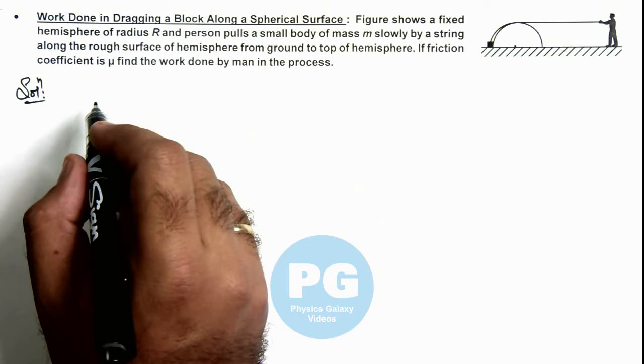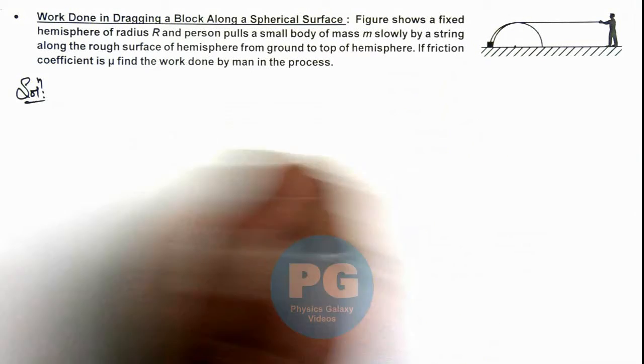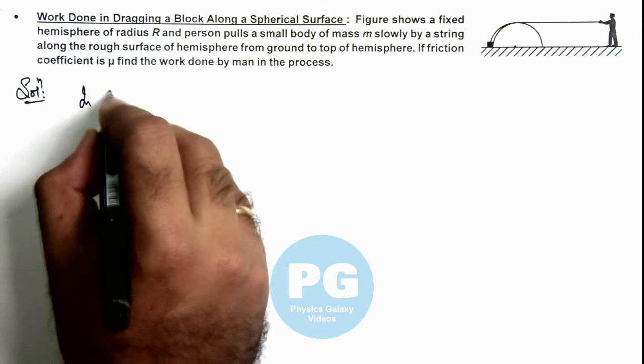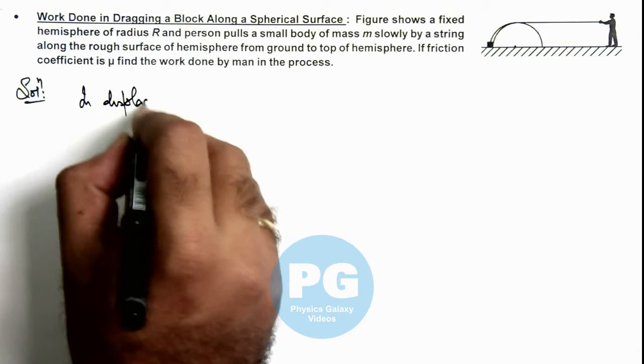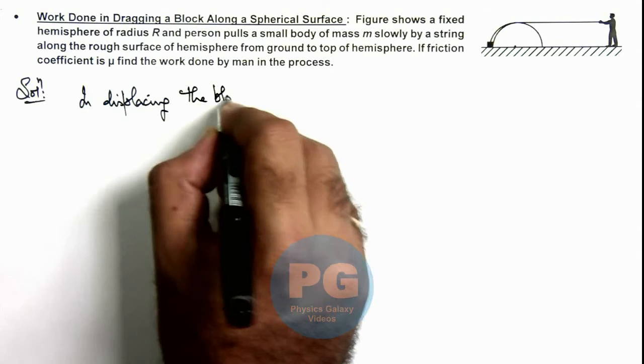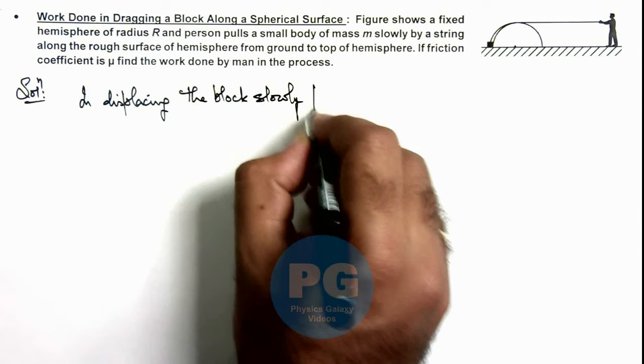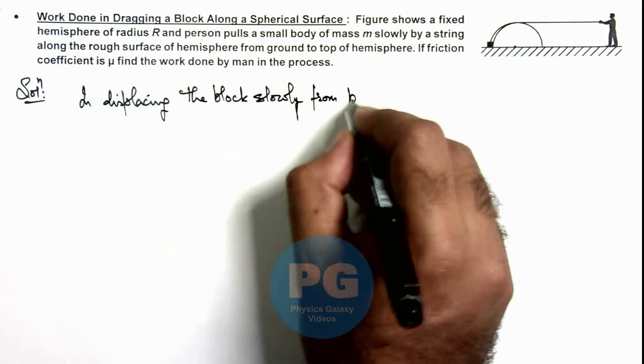So here we can say, both gravity as well as friction are opposing the motion. So we can write, in displacing the block slowly from bottom to top...